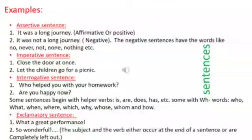Next, exclamatory sentences. An exclamatory sentence expresses some sudden or strong feeling. It always ends with an exclamation mark. For example, what a great performance! So wonderful! The subject and the verb either occur at the end of a sentence or are completely left out in exclamatory sentences.